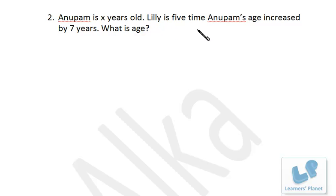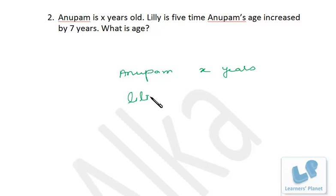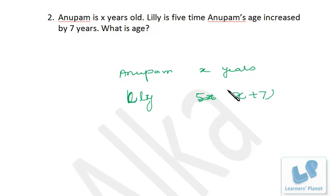Let's take one more: Anupam is x years old. Lily is five times Anupam's age increased by seven years. First, Anupam's age increased by seven years gives us x plus 7, then five times that. Do not forget to put the bracket — as I told you in the previous session. So Lily will be 5 times (x plus 7).